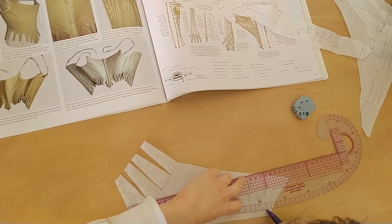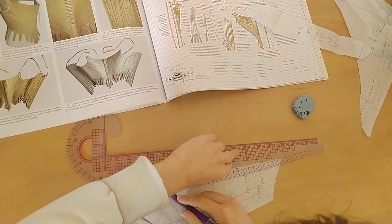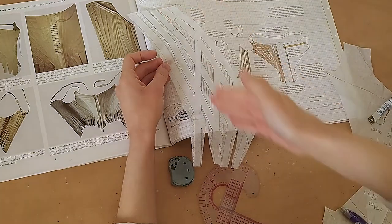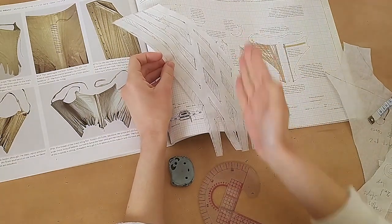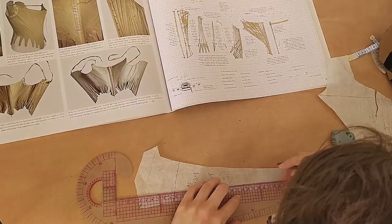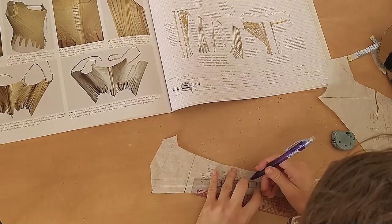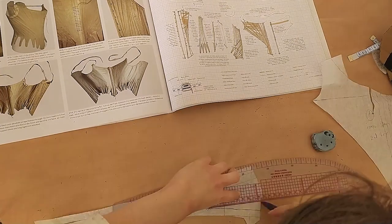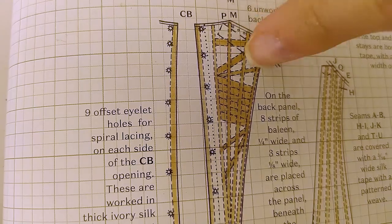The boning channel placement goes roughly: A bone runs from the top edge into each tab. In the pieces where the tabs come at an angle and don't run straight down from the top, we have another small bit of boning crossing the main one. The back piece has a bone right up against the edge, then a gap for eyelets, and then more vertical bones, and also two small horizontal ones up top.